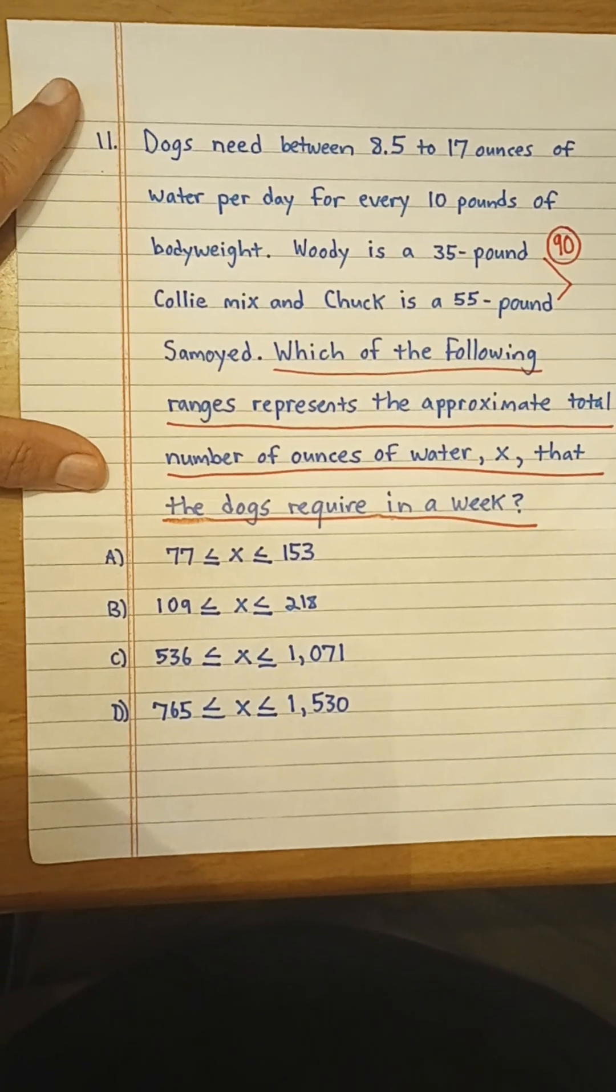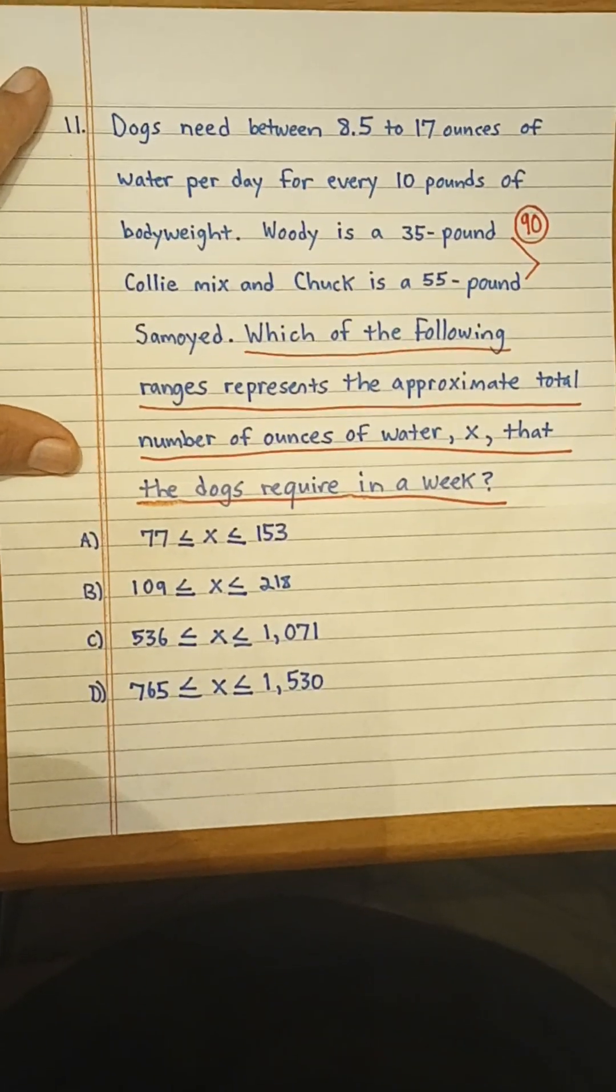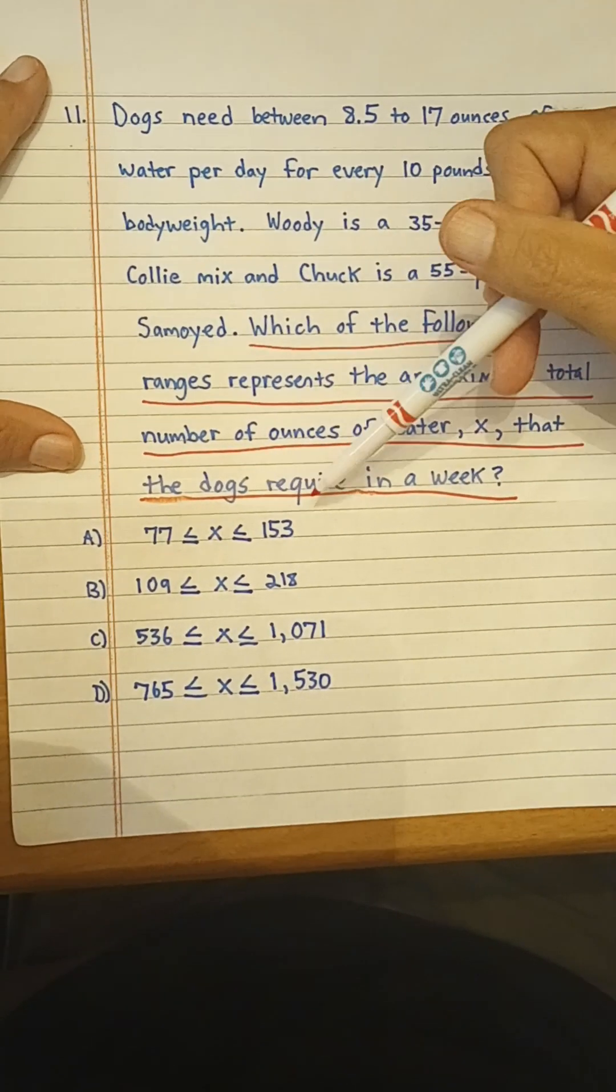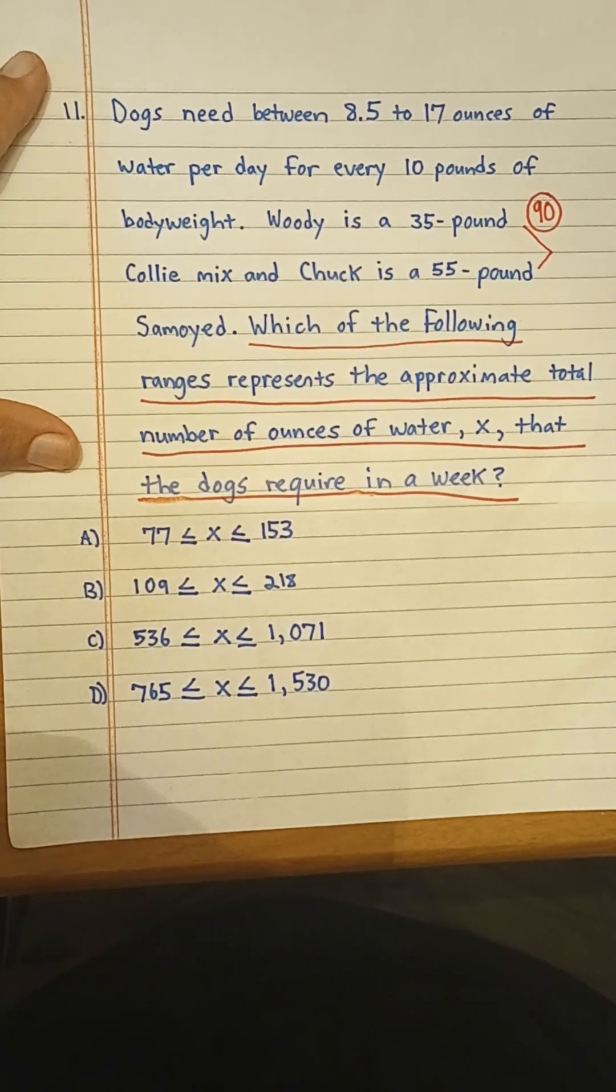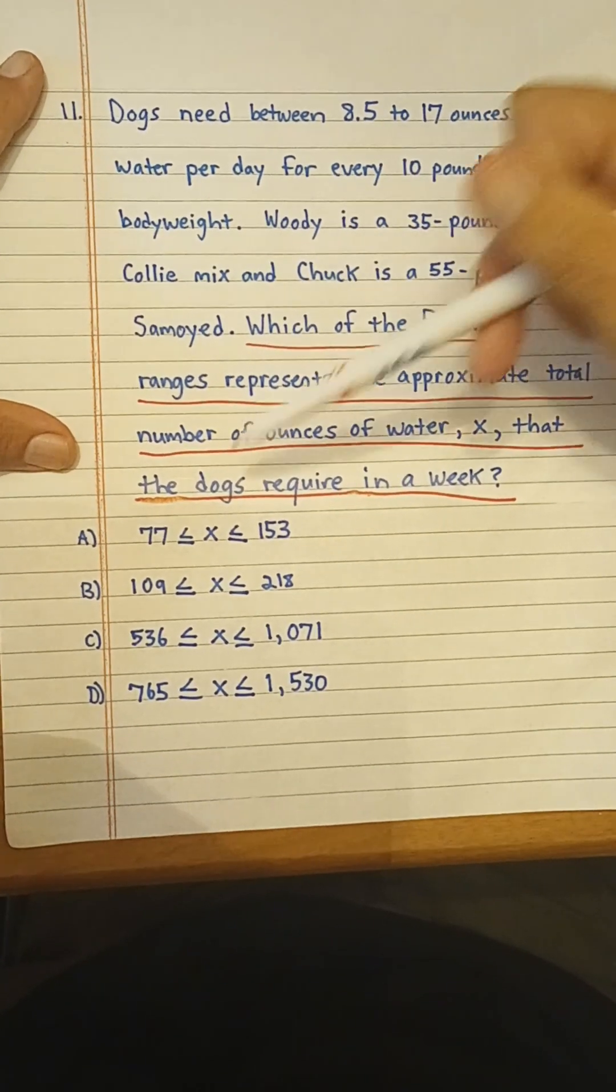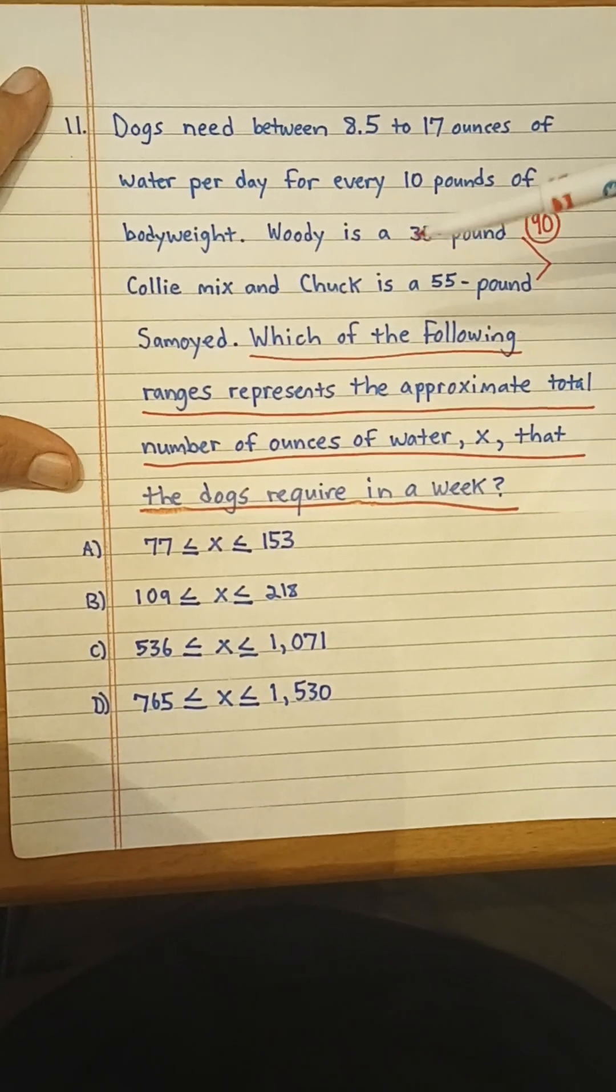All right, now let's actually be test smart and look at the answer choices here. The answer choices can tell us a lot. They all differ significantly. They don't have any numbers in common.